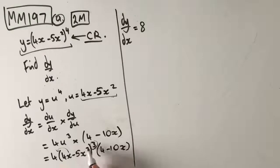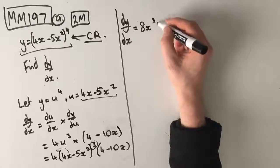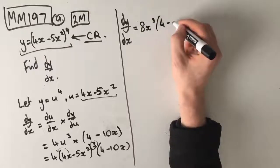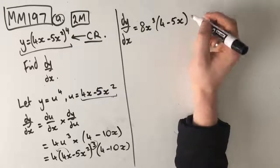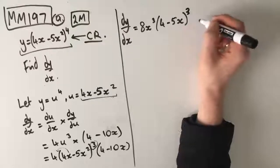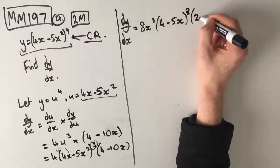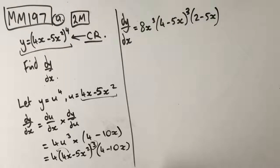So this x is actually affected by this cubed. So we're going to get an 8x cubed out the front, and then we're going to get 4 take 5x to the power of 3. Then we're also going to get 2 take 5x here. So, yeah, that's our dy dx.